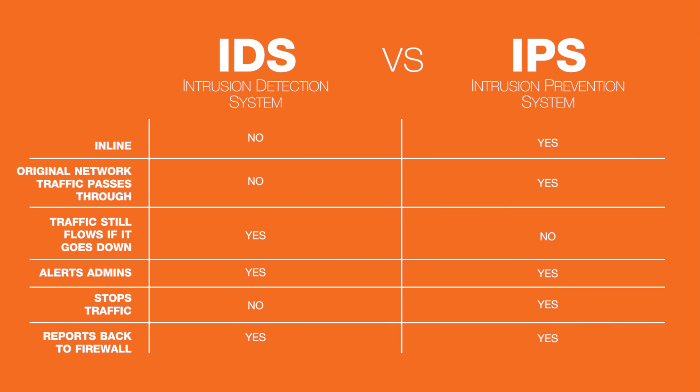If the IDS sensor goes down, possibly after a targeted attack, traffic will still flow. If an IPS is targeted, attacked, and brought down, traffic might stop right there.